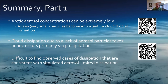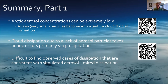To summarize this first part: Arctic aerosol concentrations can be extremely low, and in that case, the Aitken mode particles can become important for cloud droplet formation — seen in simulations and supported by observations. In the second study, cloud dissipation due to lack of aerosol particles can take hours and seems to occur primarily via precipitation. But it's really difficult to find observed cases of dissipation consistent with aerosol-limited dissipation, so it's not apparent that this is an important mechanism for Arctic clouds. If anywhere it's going to be important, it's in the high Arctic, where it's most difficult to get observations — making MOSAiC field campaign data worth examining.